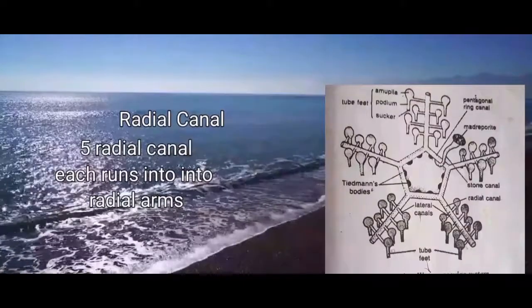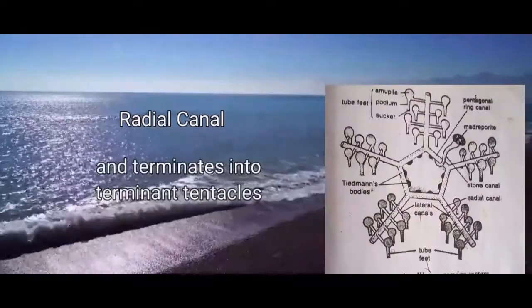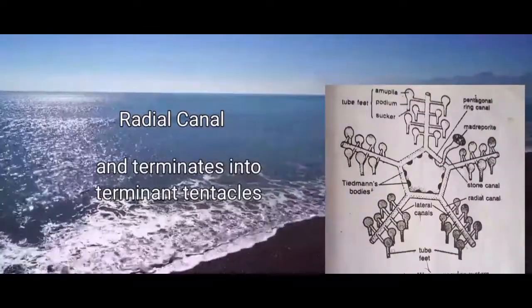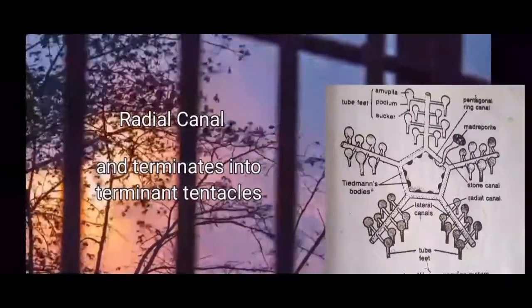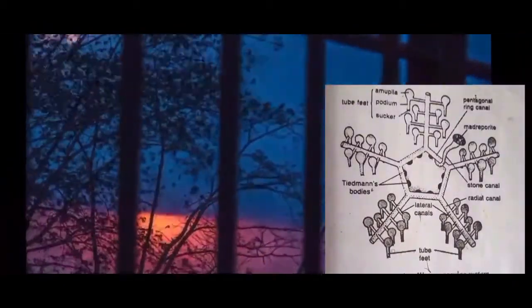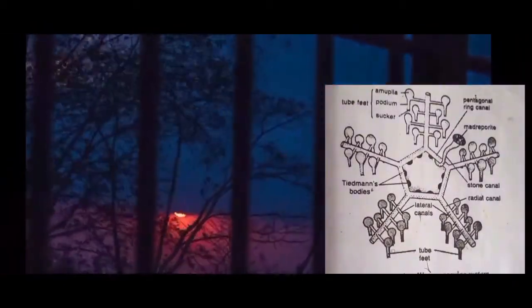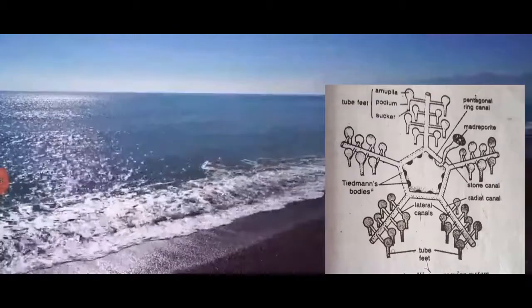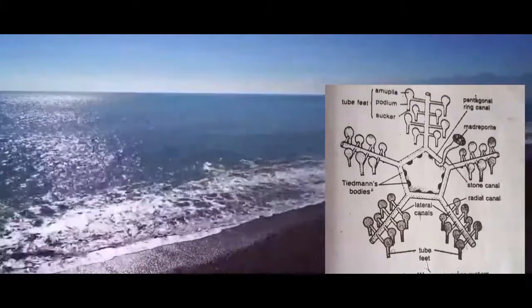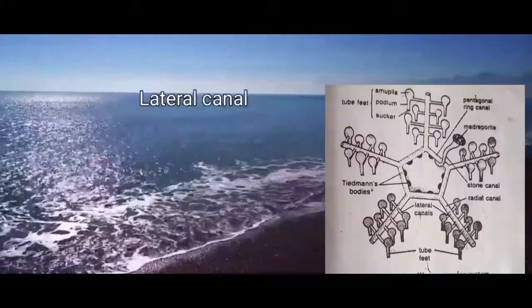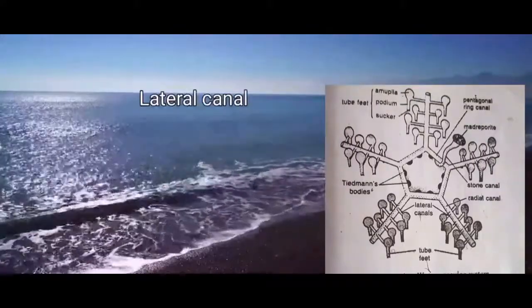Each radial canal runs into each radial arm and terminates into the terminal tentacles at the tip of the arm. The radial canals run on the oral side of the ambulacral ossicles, covering the ambulacral groove.